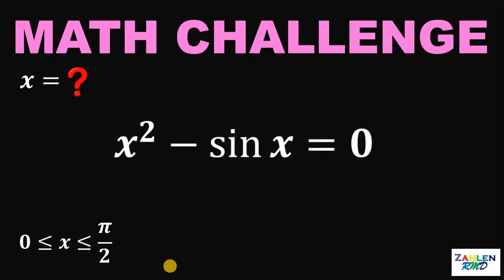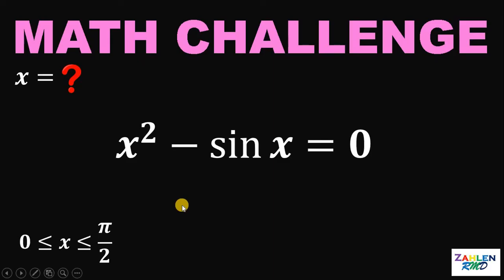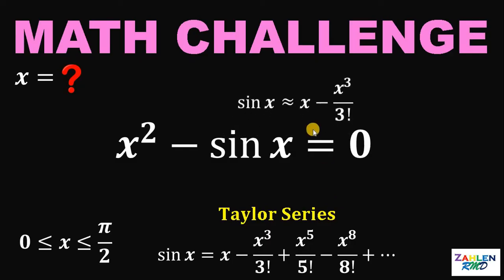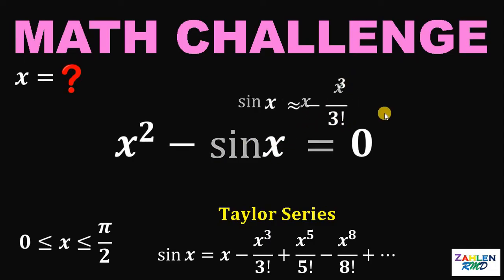Let's answer this question together. Here's the easiest way to approximate the value of x. In this method, we will use the Taylor series expansion of sine of x. Sine of x using Taylor series is equivalent to x minus x cubed over 3 factorial, plus x raised to the 5th power over 5 factorial, minus x raised to the 7th power over 7 factorial, and so on. So we can say that sine of x is approximately equal to x minus x cubed over 3 factorial, and we can replace sine x with this expression.